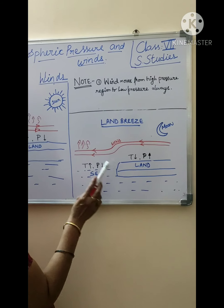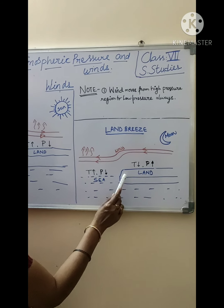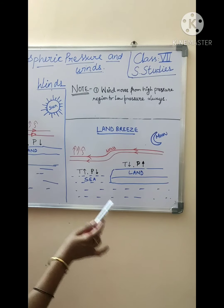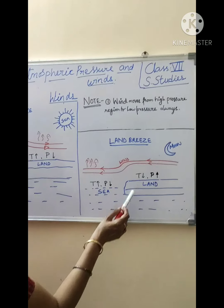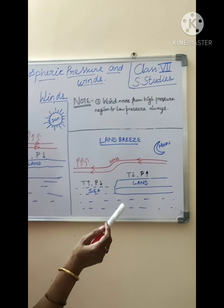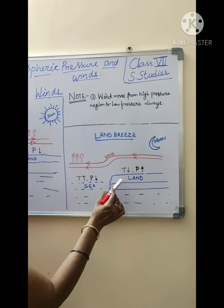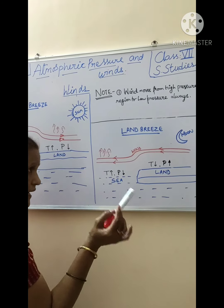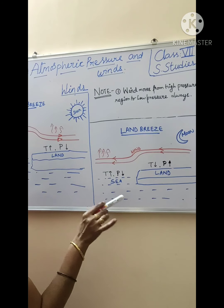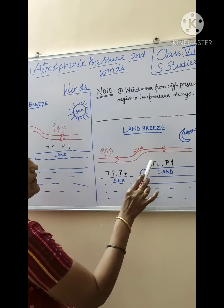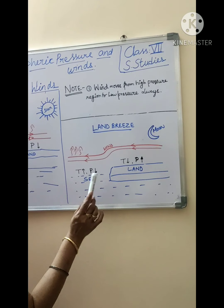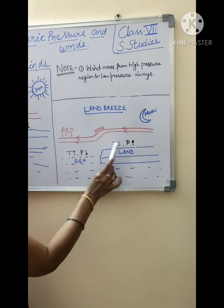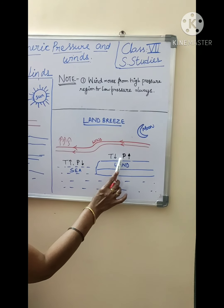In the night time, land gets cool quickly — jaldi thandi hoti. Usually in the evening by 7 or 8 o'clock, the land temperature goes down. In the afternoon it is hot, but in the night time after 7 o'clock, the land is not that warm anymore. So the temperature is low. Where the temperature is low, pressure is high.